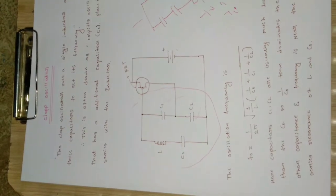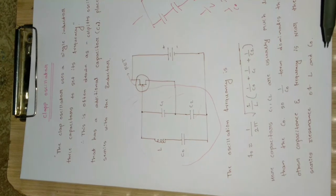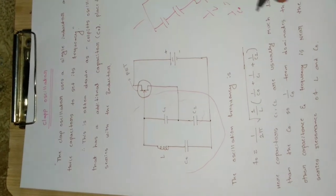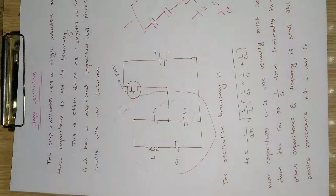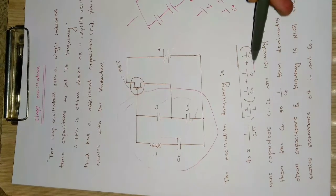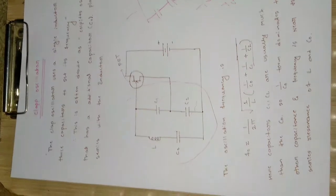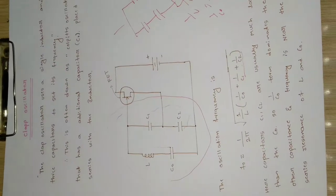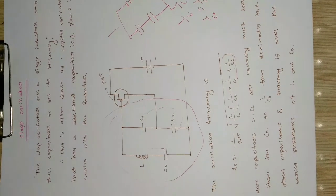The resonance frequency is decided by only L and C0. That is, F = 1/(2π√(LC0)), where C1 and C2 are dominated by C0 and thus neglected. The resonance frequency is only decided by the L and C0 values.